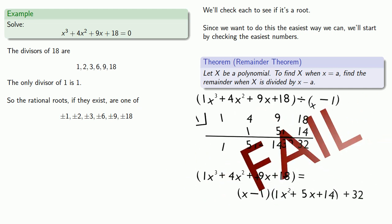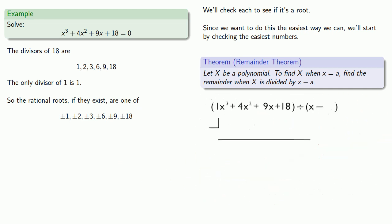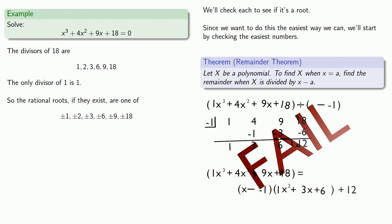We'll check to see if minus 1 is a root. We'll divide. So again, we know our polynomial is x minus negative 1 times something plus 12, which means that negative 1 is not a root.